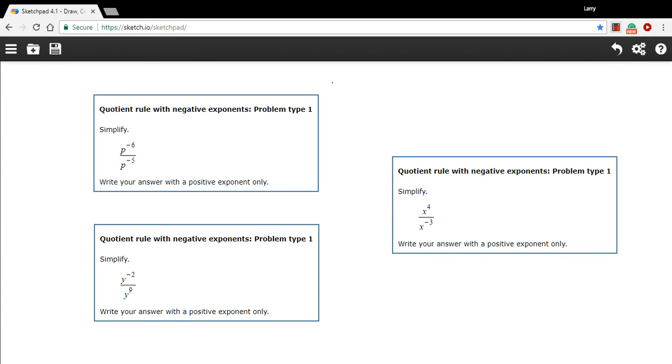In these problems, we're using what's called the quotient rule for exponents, and we have negative exponents to deal with. A quotient rule, that just means what do you do when you divide something that has the same base and exponents?